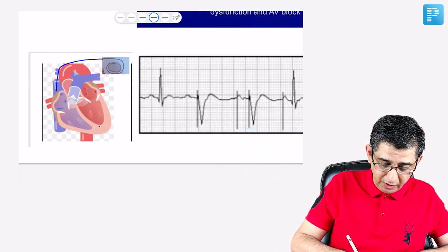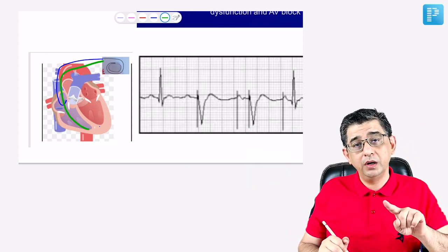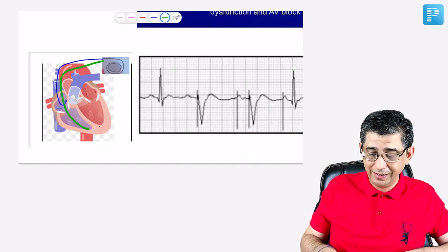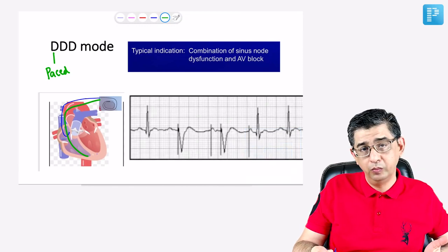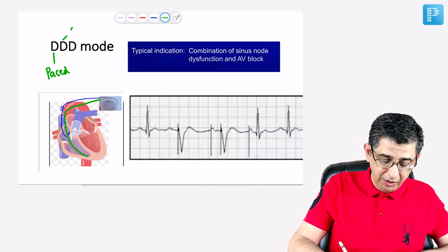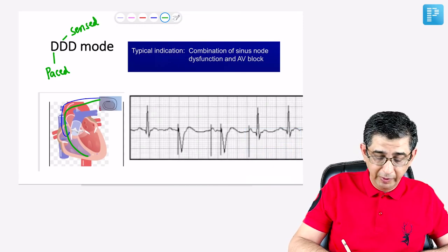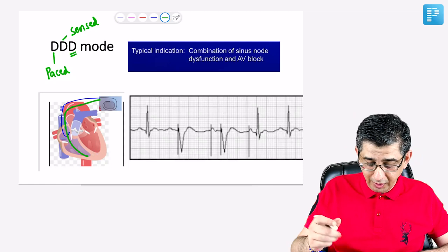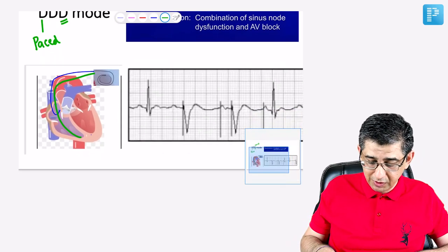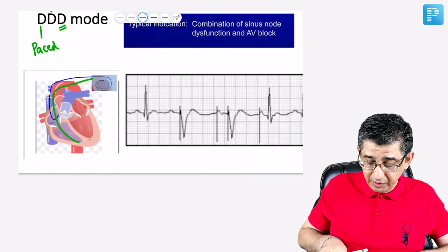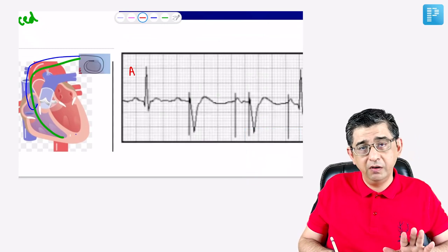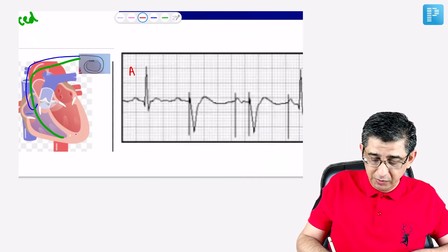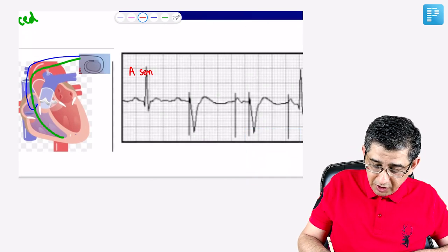In DDD mode: one wire is in the atria, a second in the ventricle. We get input, and based on that input, both atria and ventricle are paced and sensed, with both inhibition and triggering responses possible. On the ECG, when the atria contracts normally and the QRS occurs normally, the pacemaker does not generate a pacing spike — this is written as 'A-sensed, V-sensed,' meaning the computer recognized normal activity and did not intervene.